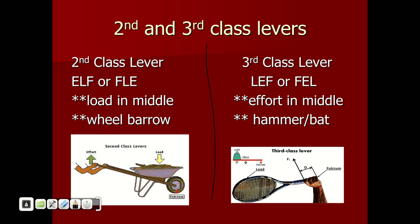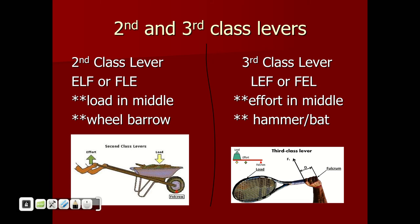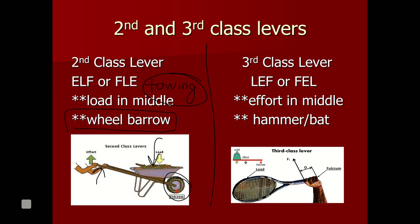A second class lever is where the load is in the middle — what you're lifting is in the middle, and the fulcrum and the effort are on opposite sides. The classic example is a wheelbarrow: the fulcrum is the wheel at the bottom, what you're loading is in the middle, and you're lifting at the end. Anything you're towing — like a tow truck towing a car — is also a second class lever, because the car's weight pulls down in the middle while the wheels act as the fulcrum.